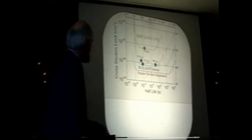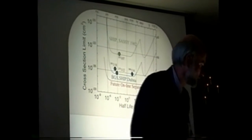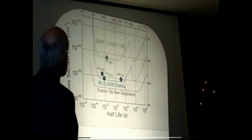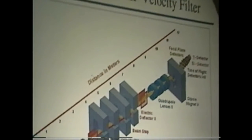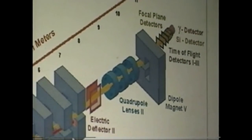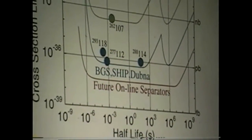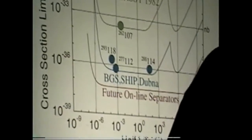I show three dots on here. This was the sensitivity of experiments during the time of element 107 before they made a lot of the improvements with the velocity filter ship. The improvements they made was increasing the angular acceptance by replacing these quadrupoles. They added another magnet here at the end of the separator to help with the rejection, and the detection system is that much better. One of the recent experiments they've done is the discovery of element 112, which you can see is pretty near the limit of the sensitivity.